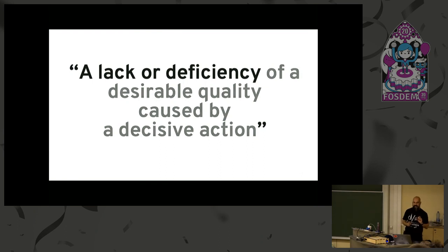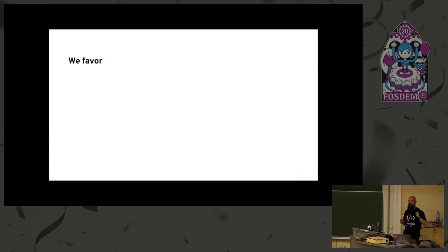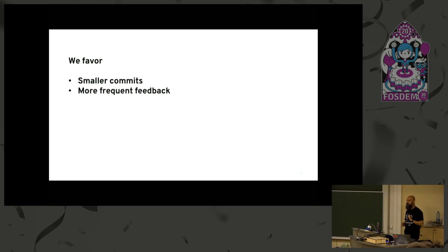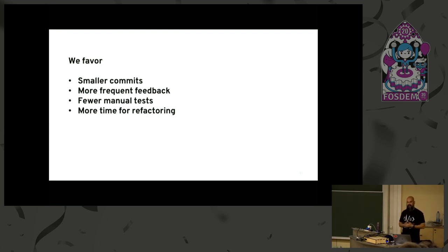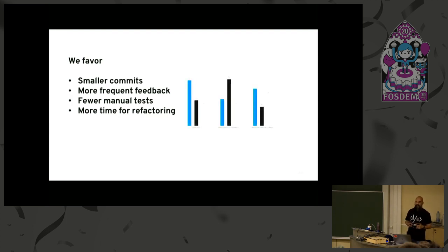Let's go back to the definition and look at 'the lack or deficiency' part. Here's a quick straw poll: do you favor smaller commits? More frequent feedback? Fewer manual tests — implying more automation? More time for refactoring? These are easy ones most people agree on in general. But here's the question: how would you know what 'more,' 'less,' or 'fewer' means unless you actually measure it? Measurement is key. Sometimes we make decisions but have no data to back anything up — it's all gut feel and heuristics. That's not scientific at all.